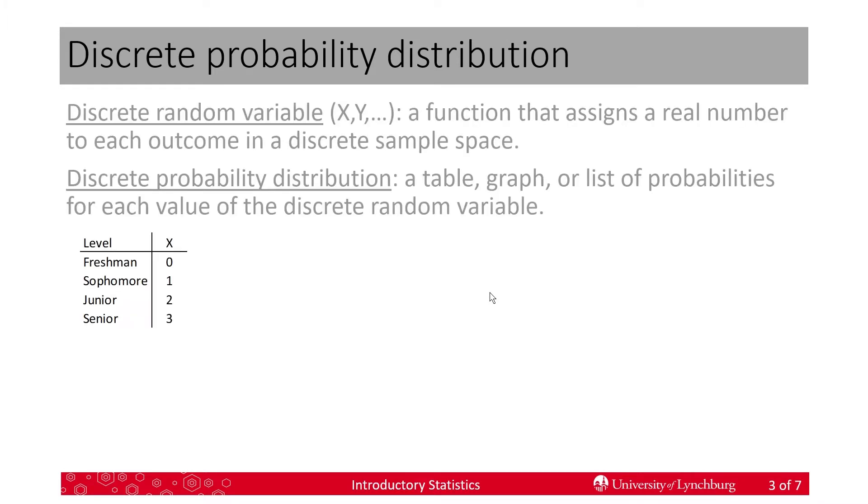Here's an example of a discrete random variable. We want the four different levels of undergraduates at college. So freshman, sophomore, junior, senior, those are not numbers. A random variable x is taking freshman and assigning zero. This would be for how many years of college has been completed, not in process but completed. So zero for freshmen, one for sophomore, etc.